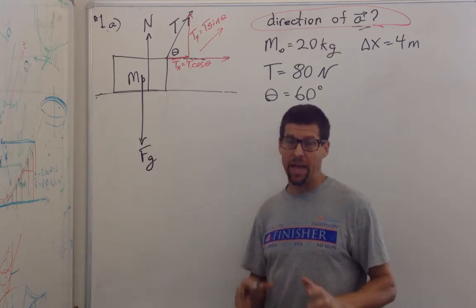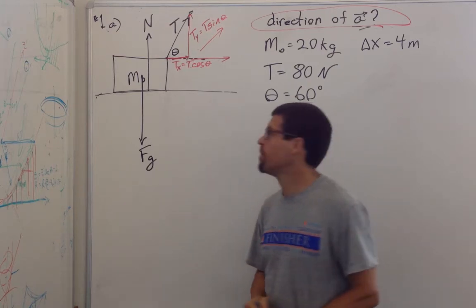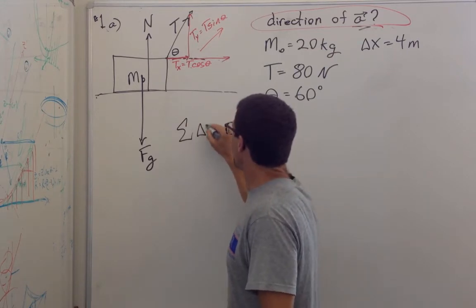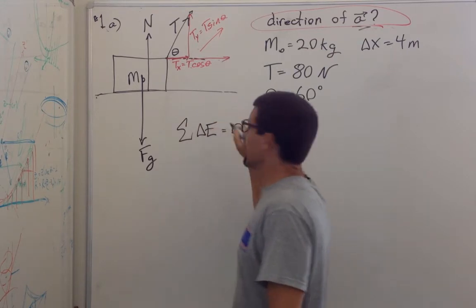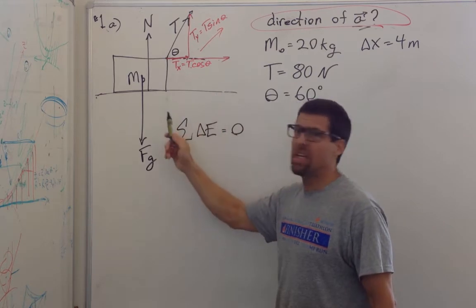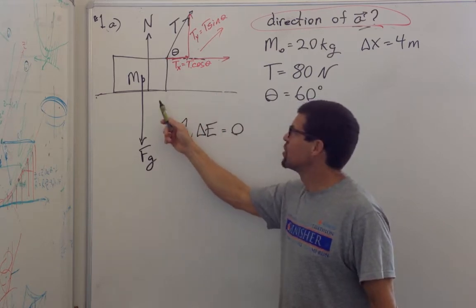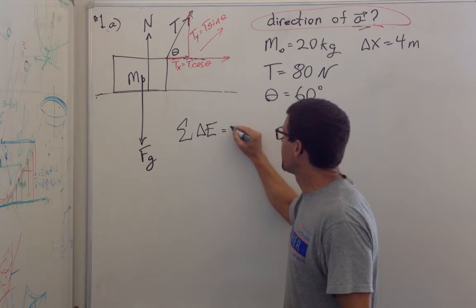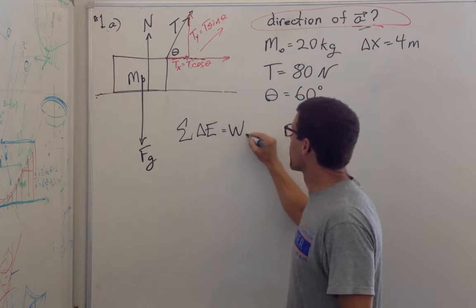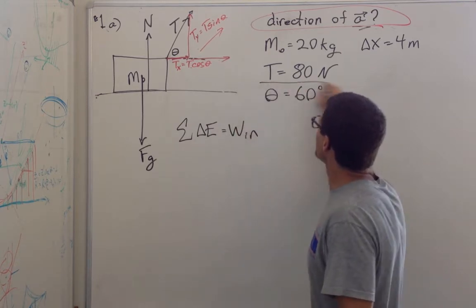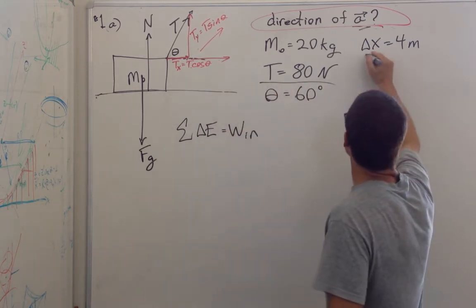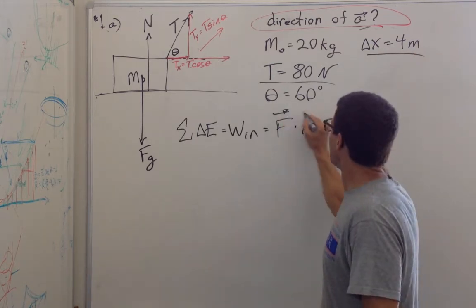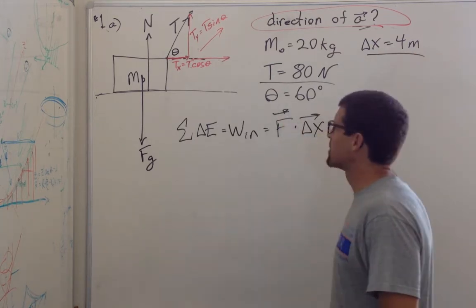Why is this clearly an energy problem? We take a look — the sum of the change of energy, energy is always conserved, is equal to zero. We see this is not the situation here; this is gaining energy. Change of energy is work put in: I have a force and I have a distance, so that's going to be the dot product of force times delta x.